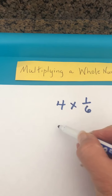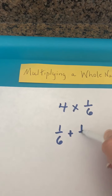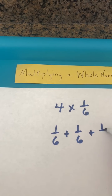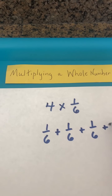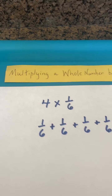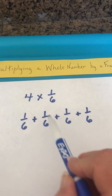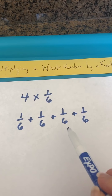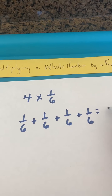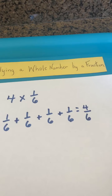We have a group of one-sixth, plus one-sixth, another group of one-sixth, and a fourth group of one-sixth. So we have one-sixth plus one-sixth plus one-sixth plus one-sixth, which gives us four-sixths.